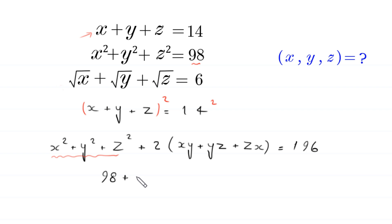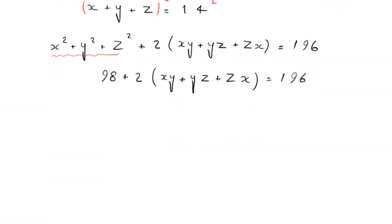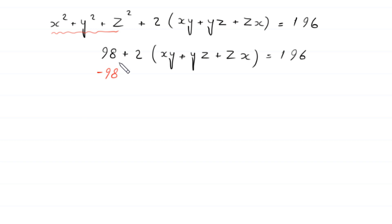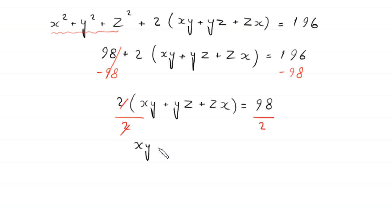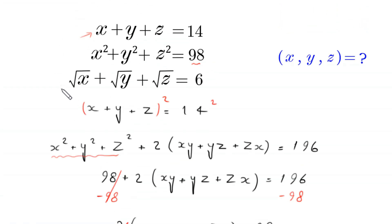Now we subtract 98 from both sides, leaving 2(xy+yz+zx) = 196 − 98 = 98. We divide both sides by 2, so we are left with xy + yz + zx = 49.